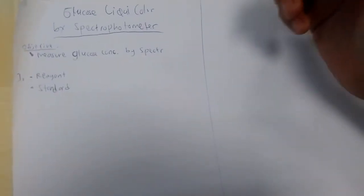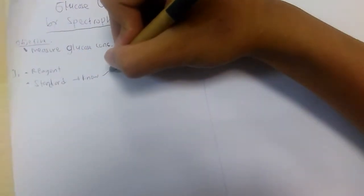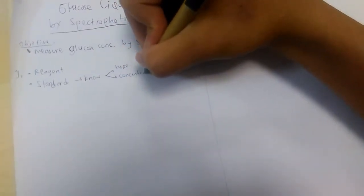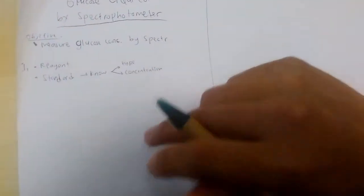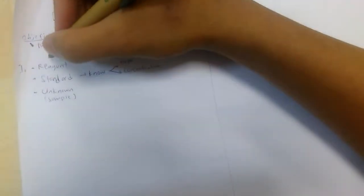How do we do the test? First, we need to prepare a reagent. A reagent is some kind of substance that has no effect in the reaction — it's just kind of like a medium of reaction. After that, we have the standard. A standard is a substance whose concentration we already know.